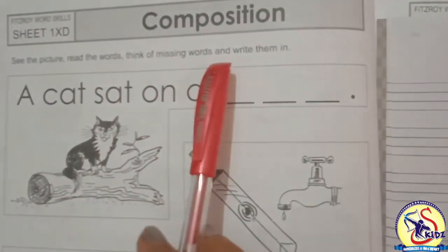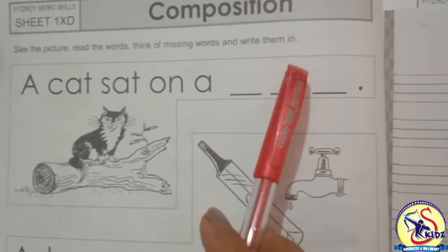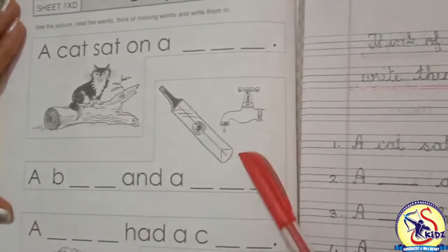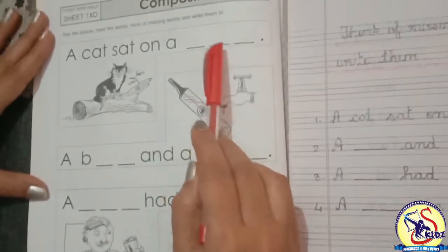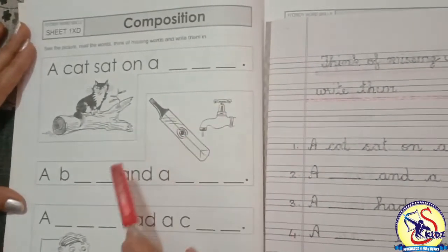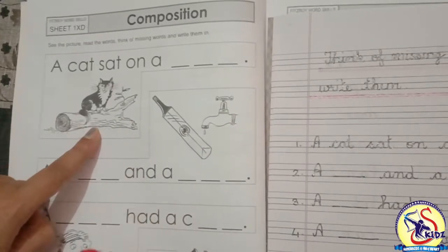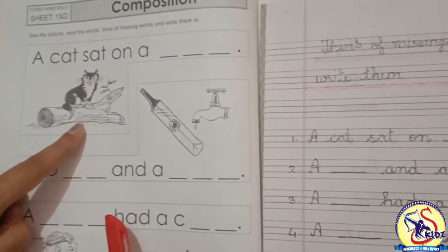In this exercise you have to see the pictures and fill in the missing words. Our first picture is... which picture is this? In this picture there